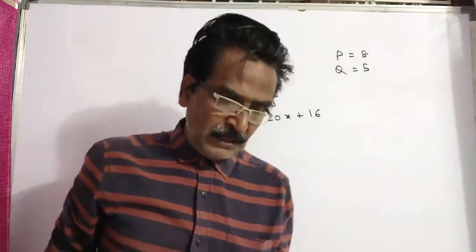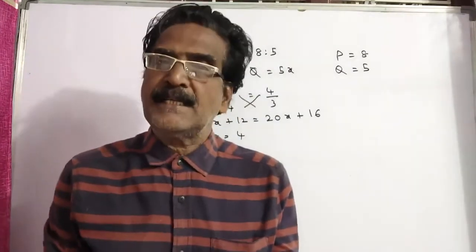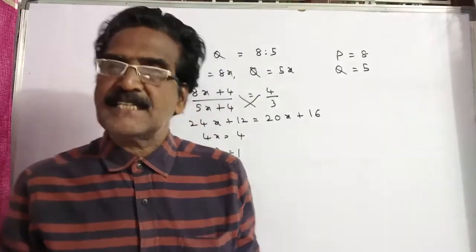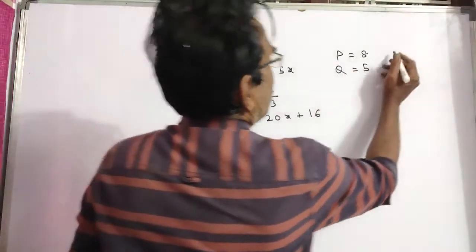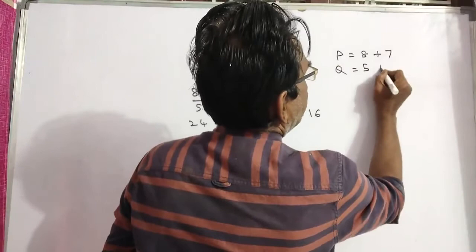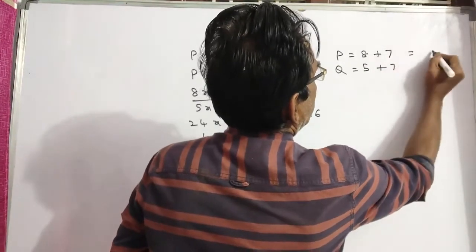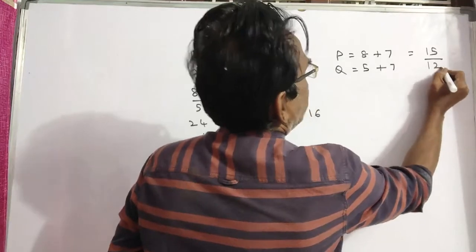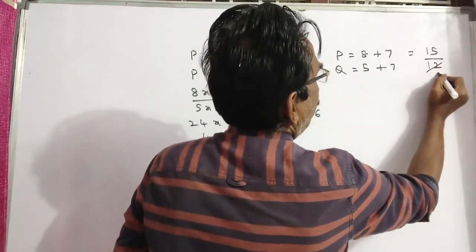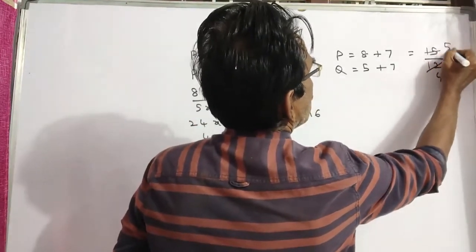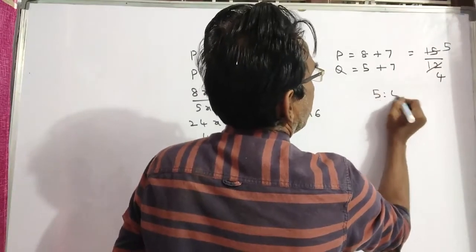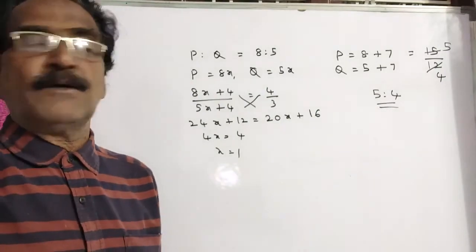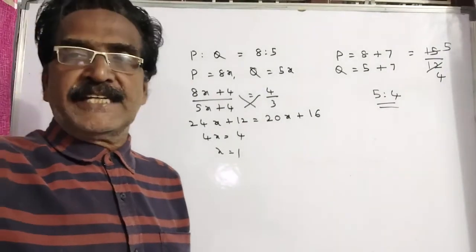Now the question is, what will be the ratio of P's years and Q's years after 7 years? So after 7 years, P will be 8 plus 7, 15, and Q will be 7 plus 5, 12. 3 into 5 and 3 into 4, and the ratio will be 5 is to 4, friends. P's to Q's ratio will be 5 is to 4 after 7 years.